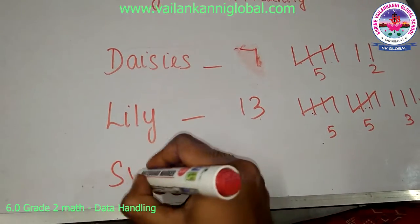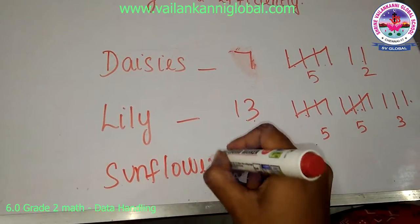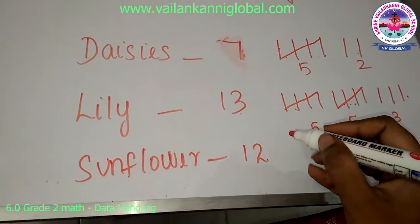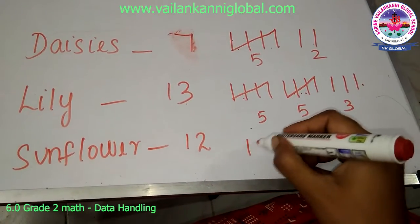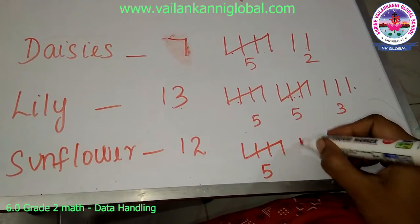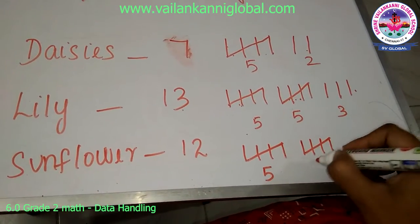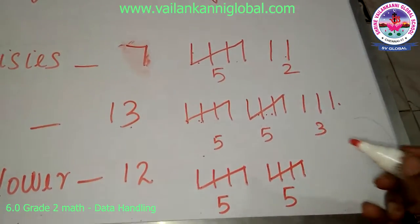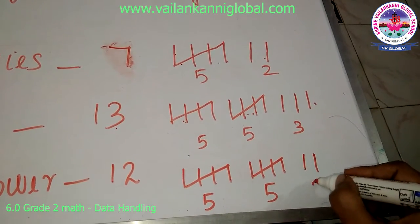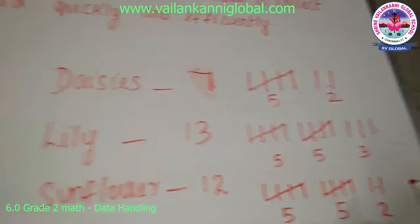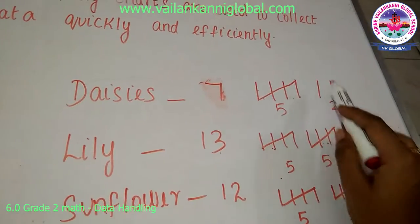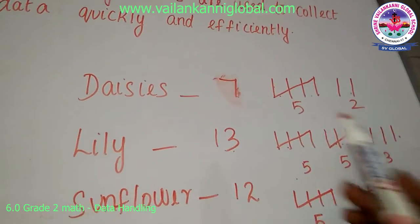One more example: if there are twelve sunflowers, first draw a group of five, then another group of five — that's ten — then draw two more lines. Five plus five plus two is twelve. So these lines will be given and from them you can find the number.